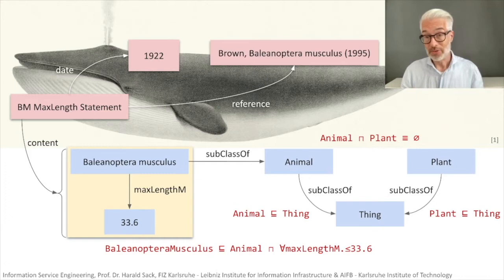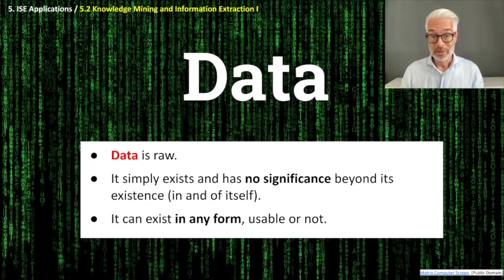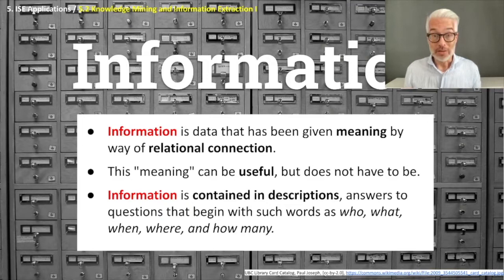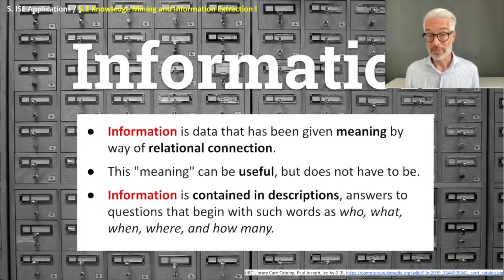Data alone — keep this in mind — is raw. It simply exists and has no significance beyond its existence; it can exist in any form, usable or not. Data alone is more or less useless. You need information. Information is data that has been given meaning by way of relational connection. This meaning can be useful but doesn't have to be. Information is usually contained in descriptions and answers to questions that begin with who, what, when, where, how many.